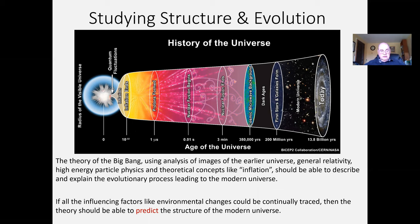The speed of light is 3 times 10 to the 8th — that's 300 million meters per second. For the astronomical unit, 1.5 times 10 to the 11th meters — taking it from 10 to the 11th to 10 to the 9th — is 150 billion meters, which is what 93 million miles turns out to be. And looking at the astronomical unit in light years, it takes eight minutes for light to get from the sun to us, so it's only eight light minutes, much less than a light year.